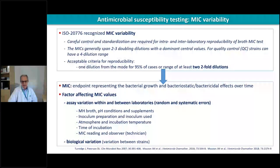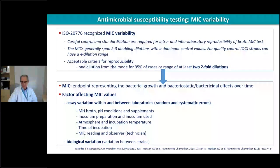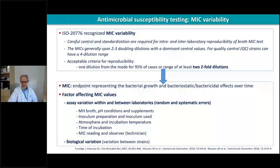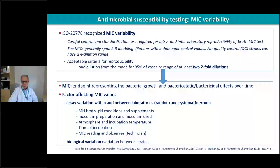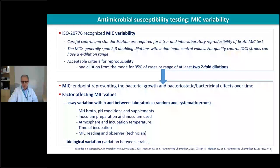We also know that the MIC is not a very exact or precise value because there is variability in its determination. This is recognized in the ISO document: it is admitted that there is at least one full dilution variability in the results we obtain — so it can be the MIC, the dilution above, or the dilution below. This is because we are using microorganisms, different compounds, and different media, and the result is affected by pH conditions, supplements, inoculum preparation, atmosphere, incubation temperature, time of incubation, and the reading of the MIC. There is also biological variation — variability between different strains.